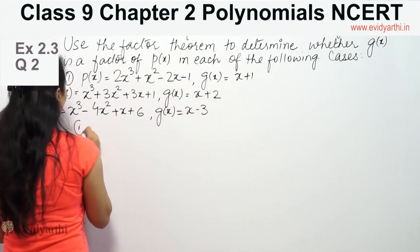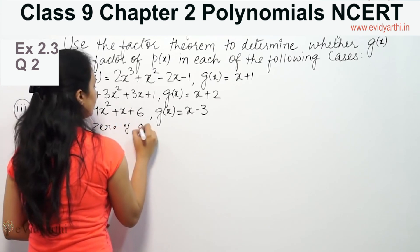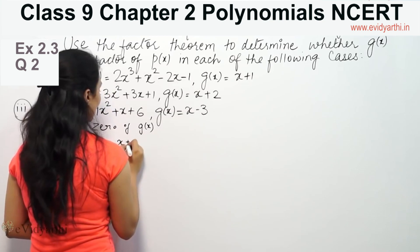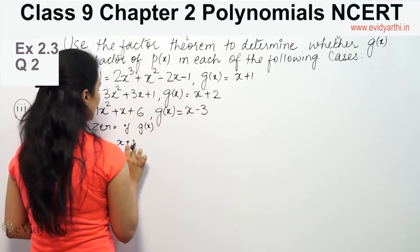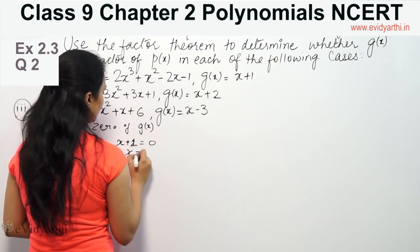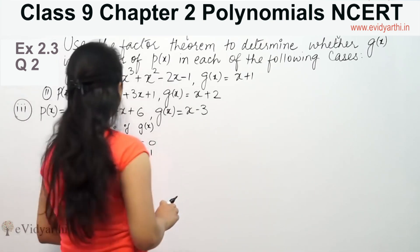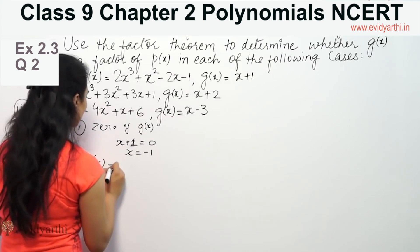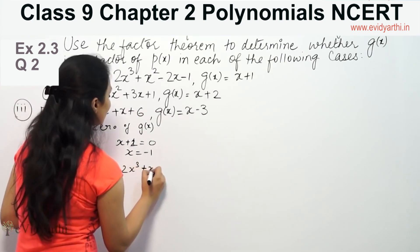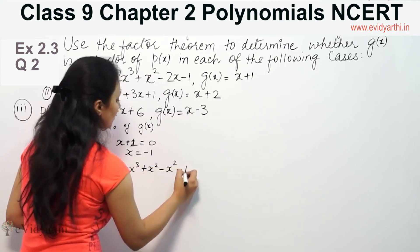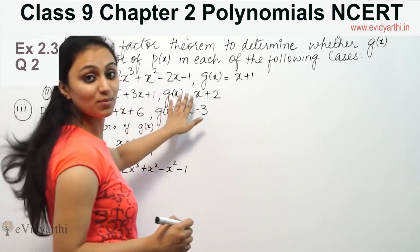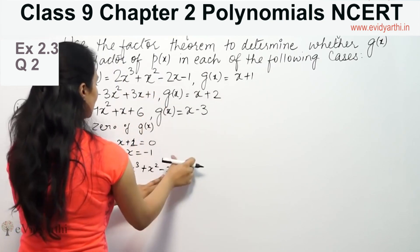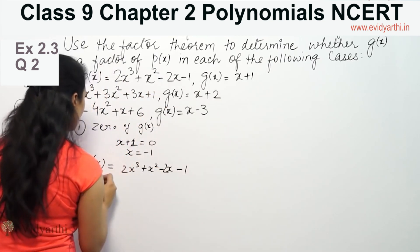We will select part 1, zero of g(x). The x plus 1 is equal to minus 1. We put this in the polynomial. The polynomial in my class, p(x) equals 2x³ + x² - 2x - 1. This is the polynomial. So it means 2x³ + x² - 2x - 1.